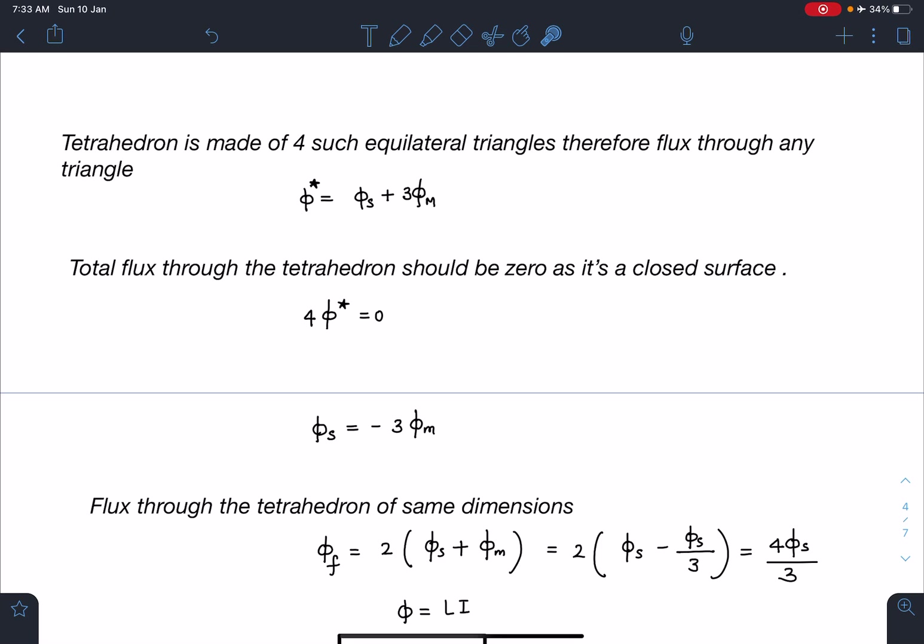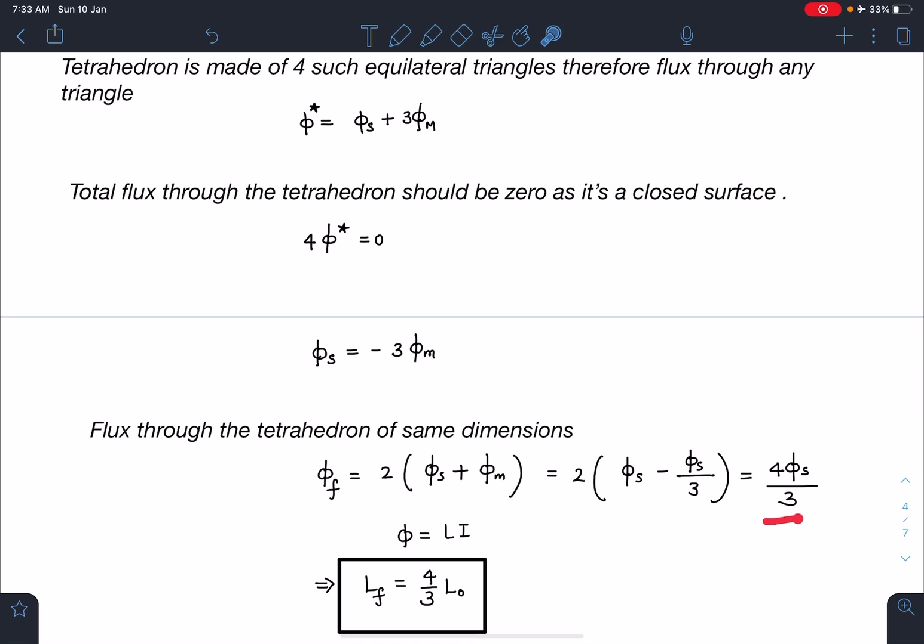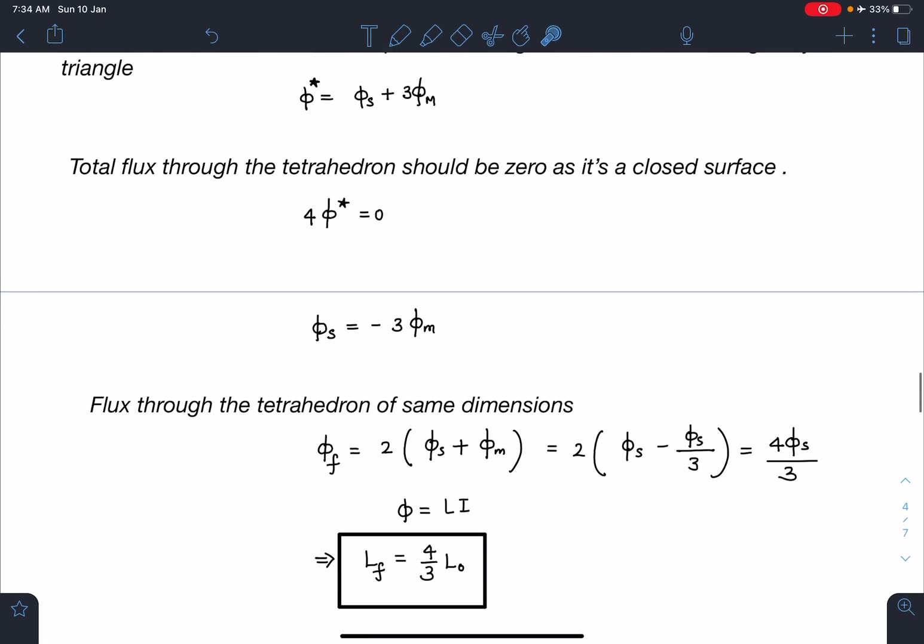When I substitute the value, flux through the tetrahedron of same dimension - please remember first I am maintaining the same size so that each triangle has side length of X. When I substitute the values you can see φ_m is nothing but -φ_s/3. So, 2(φ_s - φ_s/3). This will become 2φ_s/3 which is multiplied by 2 again, 4φ_s/3. That factor which is coming here is 4/3. Self inductance of same size of equilateral triangle, it is nothing but (4/3)L₀.